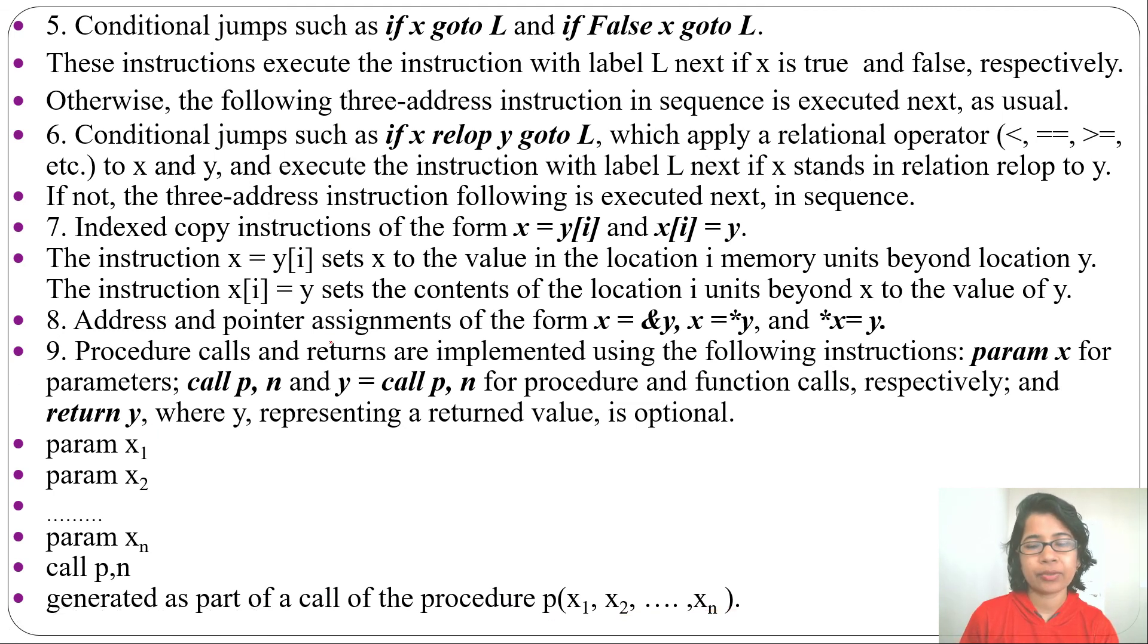So x1, x2 up to xn are parameters and p is a function call. So in three-address code you can also call a function, write parameters, return some value, use conditional jump and unconditional jump, use relop. So maximum programming statements we can represent in three-address instruction.